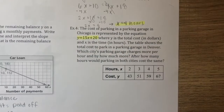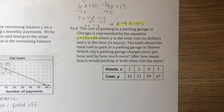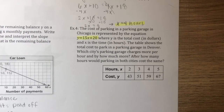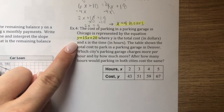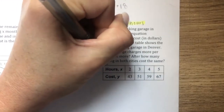For example four, the cost of parking in a parking garage in Chicago is given by y equals 15x plus 20, where y is total cost in dollars and x is time in hours. The table shows the total cost for a parking garage in Denver. Which city charges more per hour and how much more? After how many hours would parking in both cities cost the same?